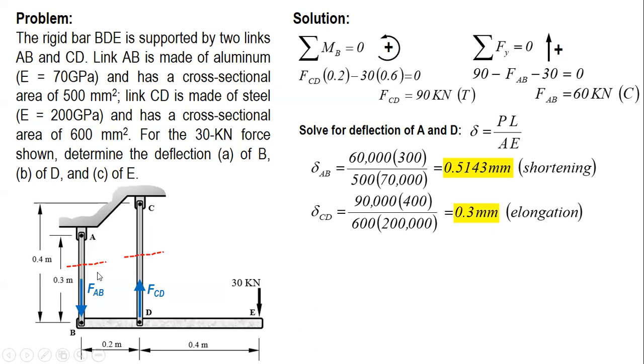To determine the deflection of E, we plot the bar BDE. This is bar BDE. And if we plot delta AB, which is shortening, then AB shortens. Therefore, point B will move upward. So it will move.